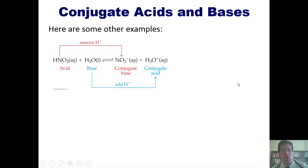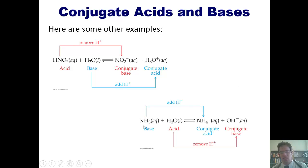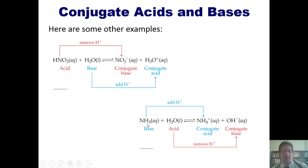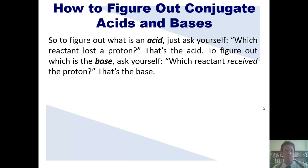Water doesn't always behave as a base — it depends on the situation. In this next example, the water is actually giving a hydrogen to NH3 to become hydroxide, OH minus. Because water is giving up a hydrogen, it becomes the acid. The thing accepting the hydrogen is NH3, which accepts it to become NH4+ ammonium. Ammonia is therefore the base, and ammonium is its conjugate acid. To summarize: the reactant that lost a proton is the acid; the reactant that received the proton is the base.